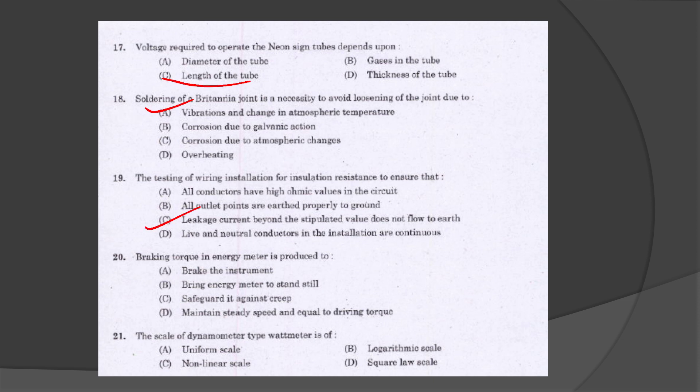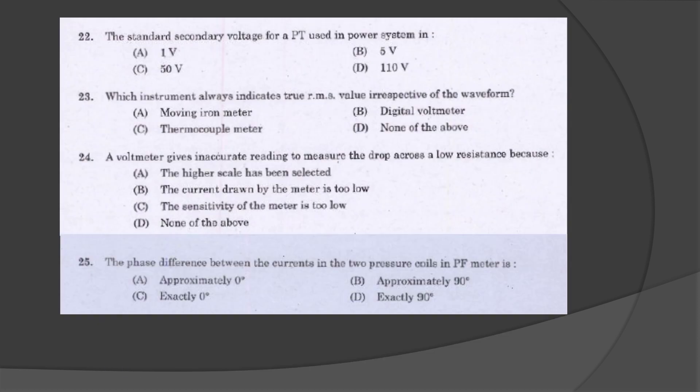Breaking torque in energy meter is produced to maintain steady speed and equal to driving torque. Scale of a dynamometer type watt meter is uniform scale. The standard secondary voltage of a potential transformer used in power system is 110 volt.